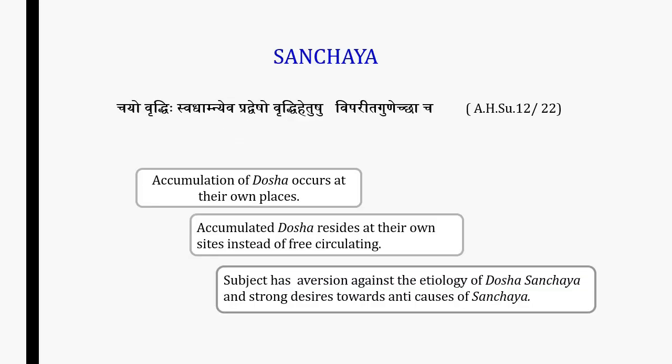Sanchayam is the first stage of Kriya Kaal, meaning accumulation of the doshas in their own sites due to various causative factors. In this stage, dosha accumulates but does not leave its own place, and is characterized by aversion towards similar and attraction towards opposite qualities of diet, drug, etc. For example, Vata will have symptoms of aversion towards dry and cold food substances.